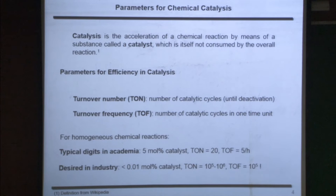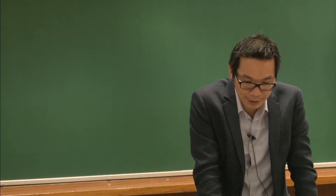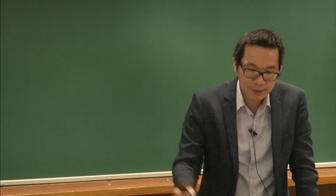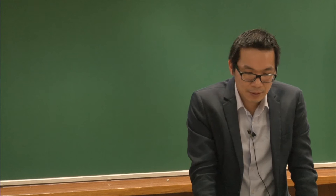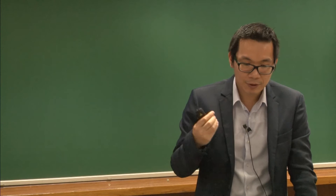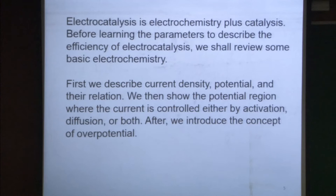When demonstrating practical applications, you should think in terms of millions of turnover numbers and very fast reaction rates. That's conventional catalysis. When you do electrocatalysis, it's coupled with electron transfer, and the basic parameters are similar. But because you're doing it under electrochemical conditions, you have to use specific parameters. This is one of the fundamentals of this chapter.